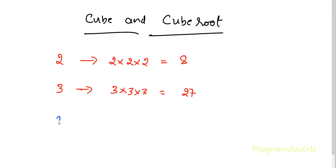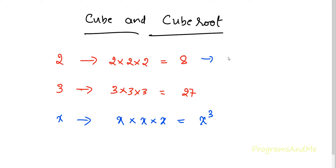In general, if I want to find the cube of x, I need to multiply x thrice — that is x cubed. You can write the cube of a number as that number raised to the power 3: 2 power 3, 3 power 3, or in general x power 3. So this is about the cube of a number.